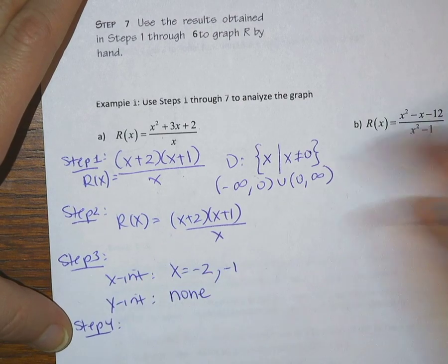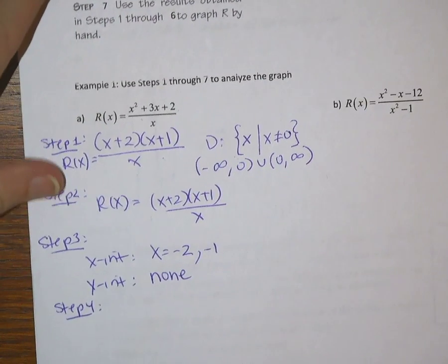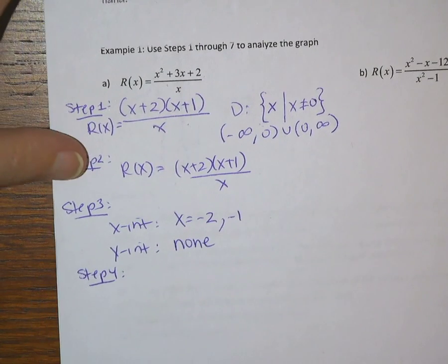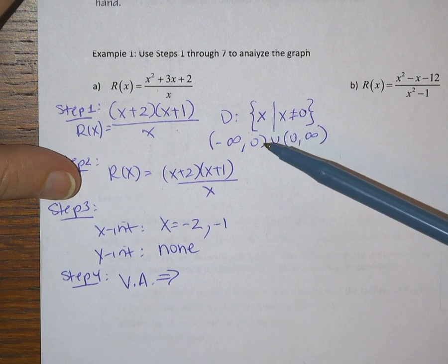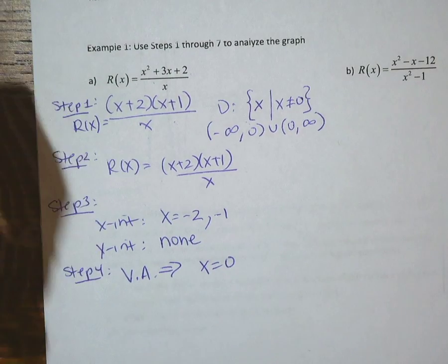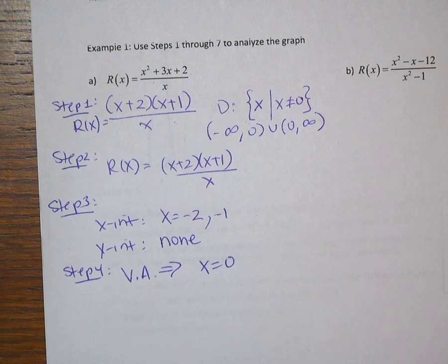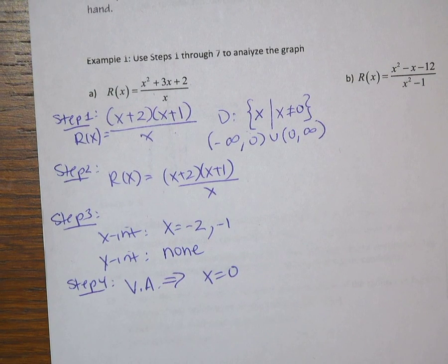Step 4: locate the vertical asymptotes. When finding vertical asymptotes, we recall that they occur where we have issues in our domain — where our x values cannot be plugged in. So our vertical asymptote for this function is x equals 0. Be careful that the vertical asymptote is not just the number 0; it is the equation x equals 0. It's a line, not a number. That's our only vertical asymptote because that's our only problem for x.